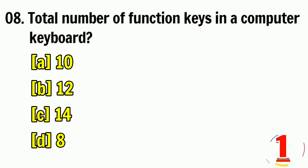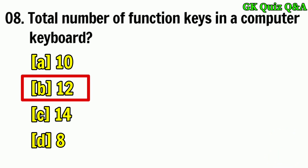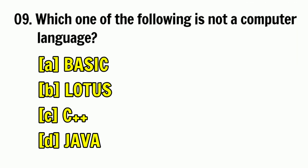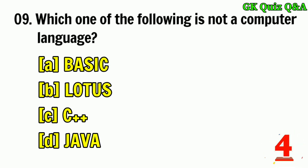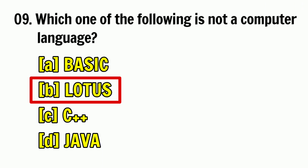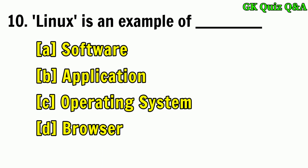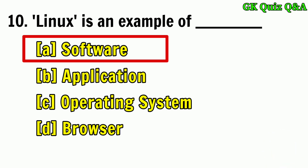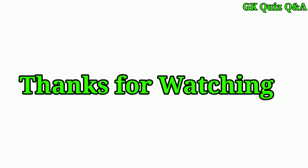Total number of function keys in a computer keyboard? Answer: B — 12. Which one of the following is not a computer language? Answer: B — Lotus. Linux is an example of? Answer: A — Software.